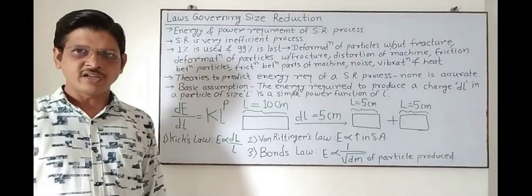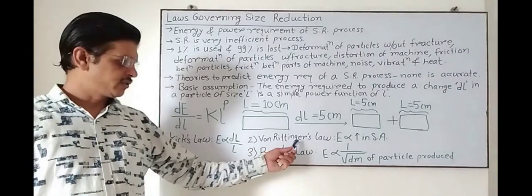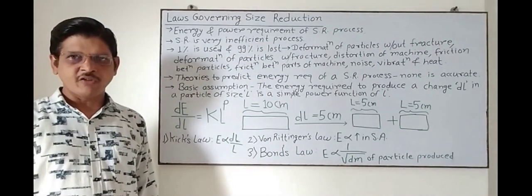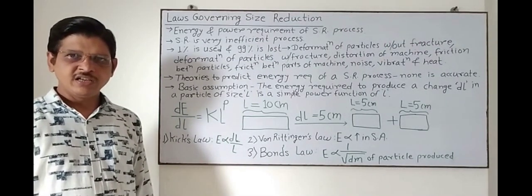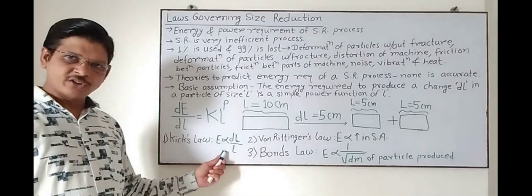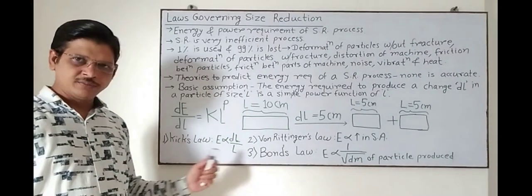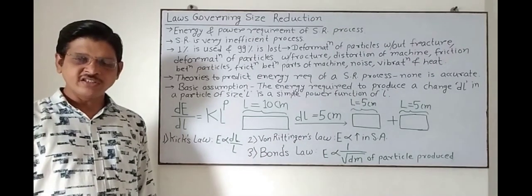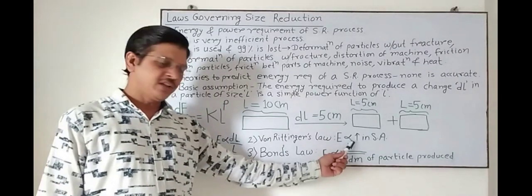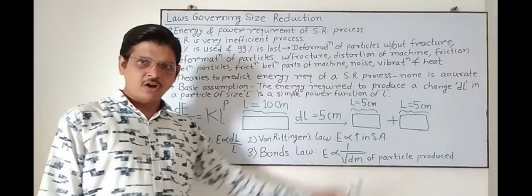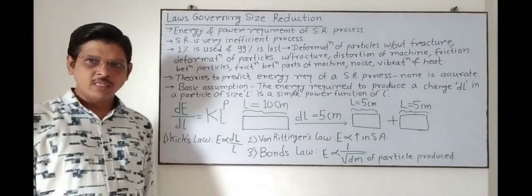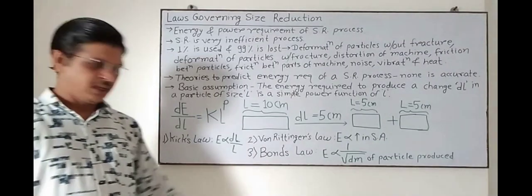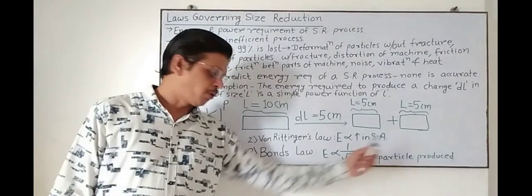The three laws of size reduction are Kick's law, Von Rittinger's law, and Bond's law. As per Kick's law, the energy required for size reduction is directly proportional to the size reduction ratio, that is dL/L. As per Rittinger's law, the energy required is directly proportional to the increase in surface area of the particles. And as per Bond's law, the energy required is inversely proportional to the square root of the diameter of the particles produced.